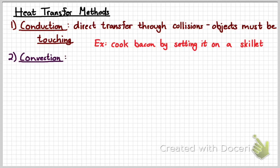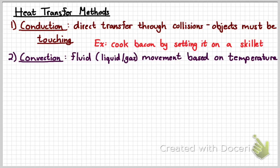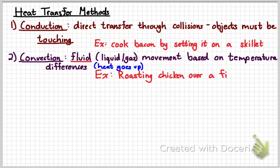The second method of heat transfer is convection. Convection occurs when a fluid, remember fluids or liquids and gases, go up because they're hotter. When they're hotter, they're less dense. So, in general, convection is the movement of fluids based on their temperature differences. Hot fluids go up, in other words. So, in another example, we'll be roasting a chicken over an open fire. Fire goes up. That's a good example of convection.